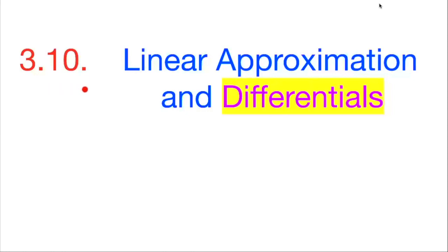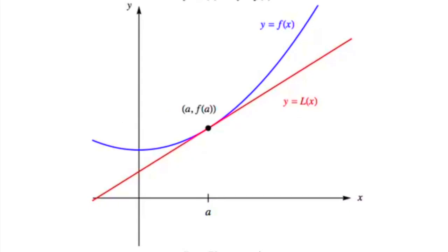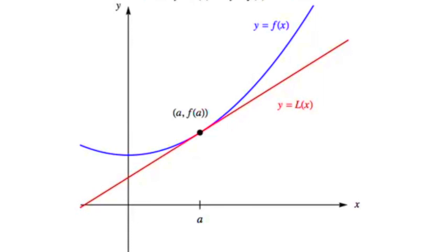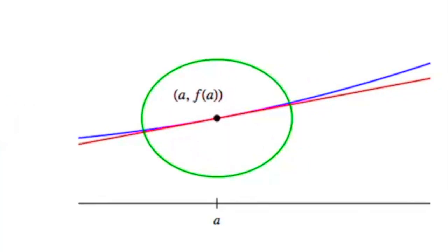3.10: Linear approximation and differentials. We have seen that a curve is very close to its tangent near the point of tangency. If we zoom in toward a point on the graph of a differentiable function, we notice that the graph looks more and more like its tangent line. This observation is the basis for the method of finding approximate values of functions.